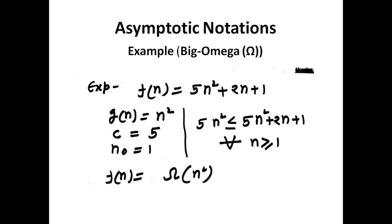Using the same example, f(n) = 5n² + 2n + 1 and g(n) = n², with c = 5 and n₀ = 1. So 5n² will always be less than or equal to 5n² + 2n + 1 for all n ≥ 1. Therefore f(n) = Ω(n²), which is the lower bound of our algorithm for c = 5 and n₀ = 1. We can write f(n) = Ω(g(n)) = Ω(n²).